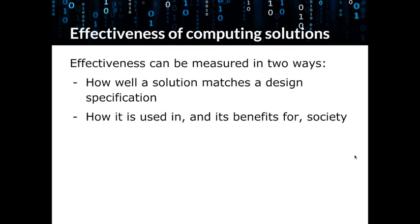Let's start with the effectiveness of computing solutions. We can look at effectiveness in two ways. One is how well the solution has matched the design specifications — thinking back to the software development lifecycle, right at the start in the requirements phase, a client has a need, and the people making the software identify that need and think about what the solution requires. If you've completely missed the mark, the solution isn't effective. But if it does everything the client wants, then it is effective.